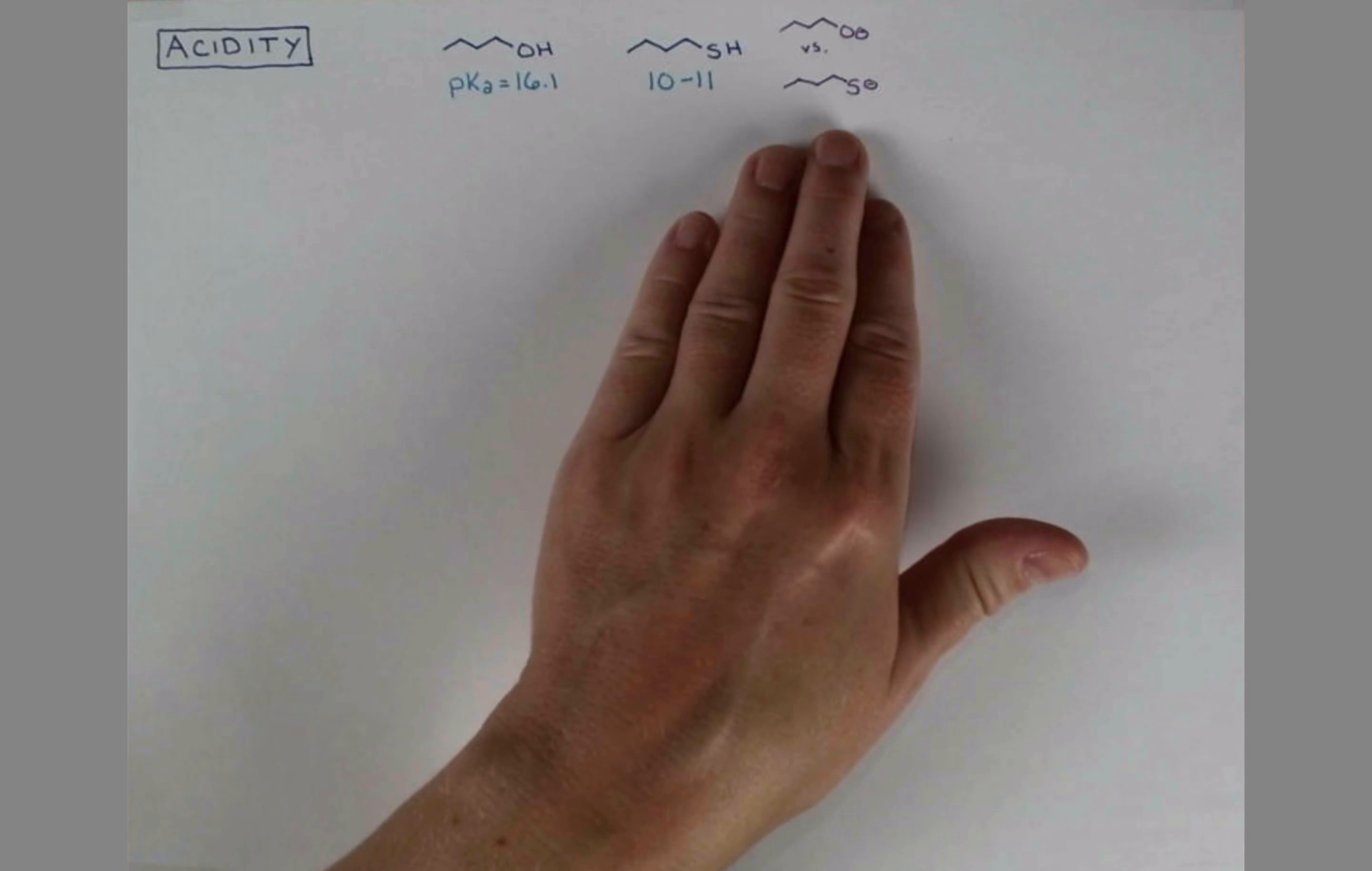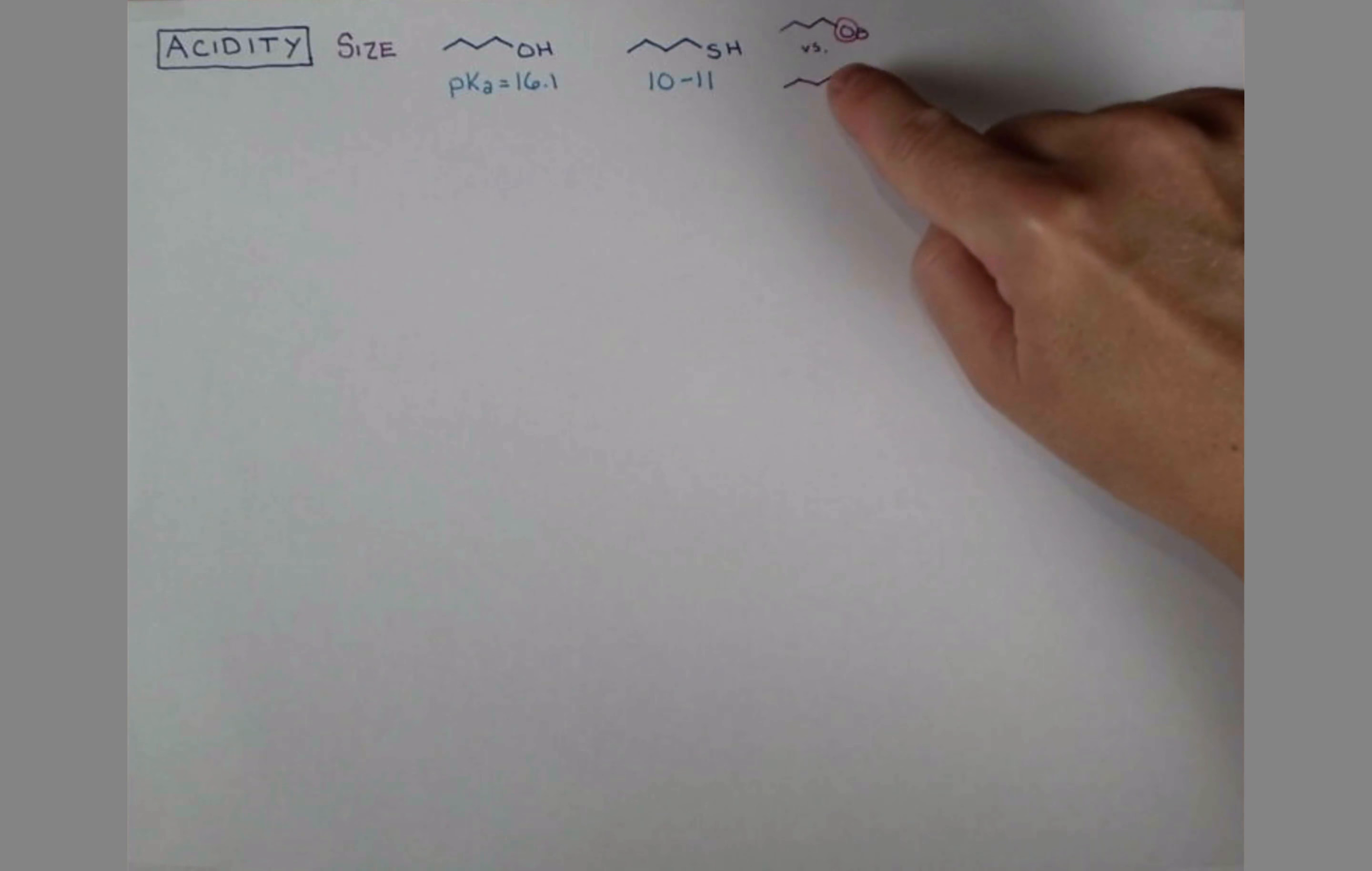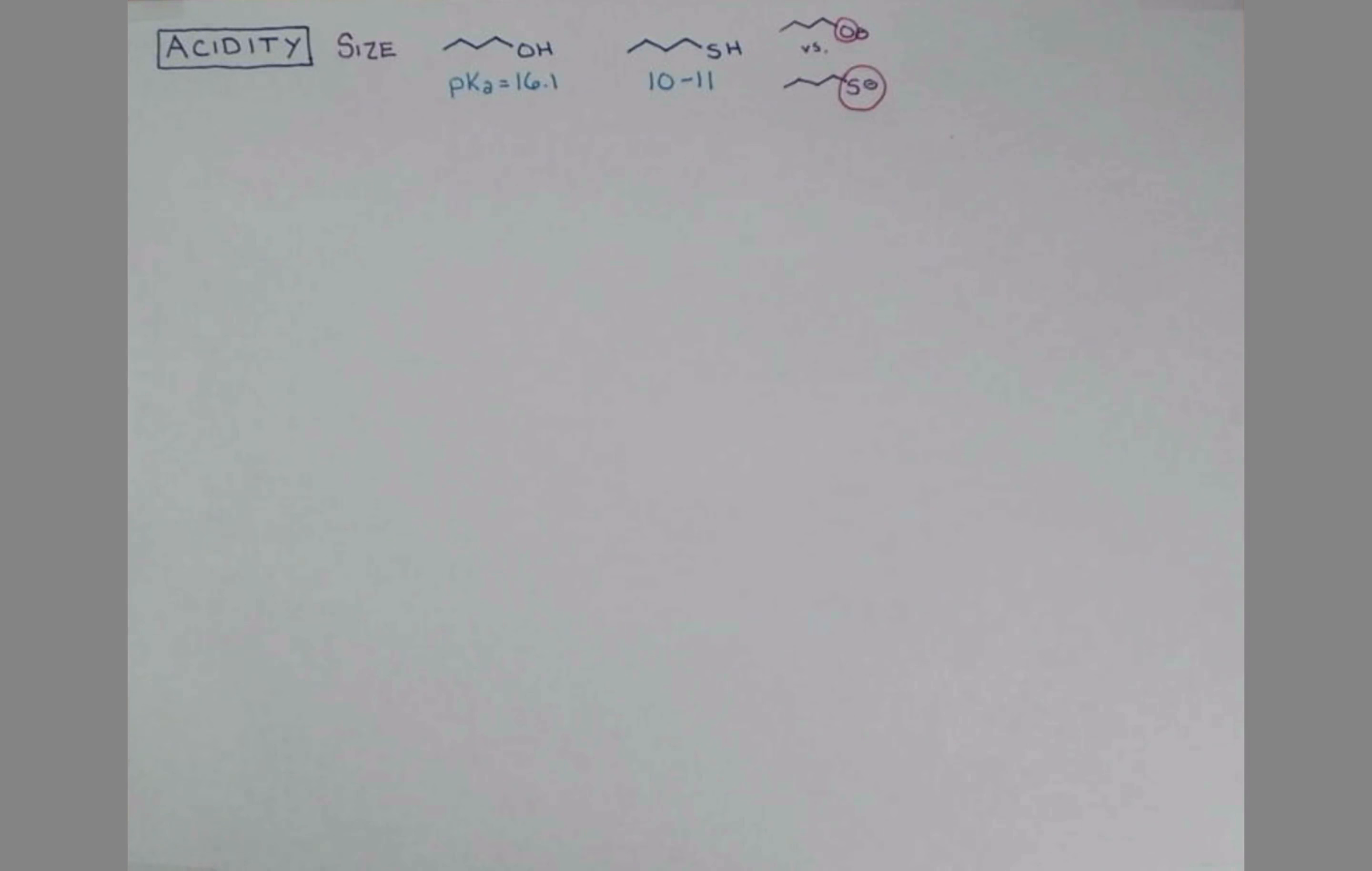The trend that we're observing here is due to size. Sulfur is much larger than oxygen. So we have this negative charge smeared all over the surface of this large atom, and that's very stabilizing. Whereas with the alkoxide, the O-, the negative charge is very concentrated close to the oxygen atom. So since we can't spread out the negative charge, it is less stable. Therefore, this compound is less likely to lose its proton.